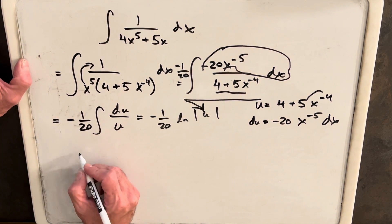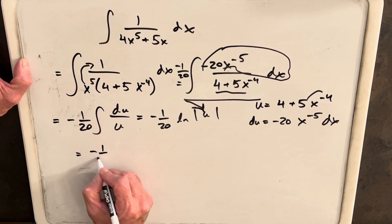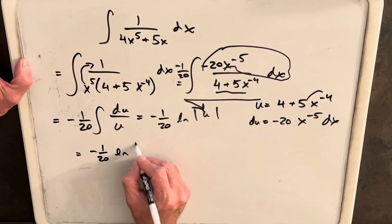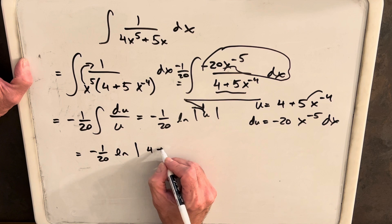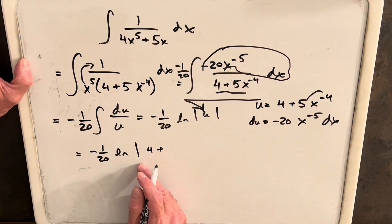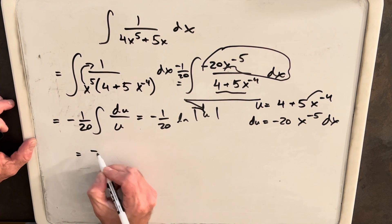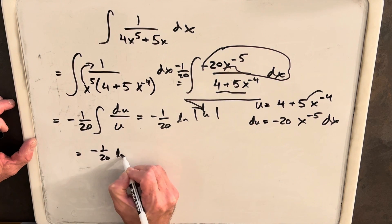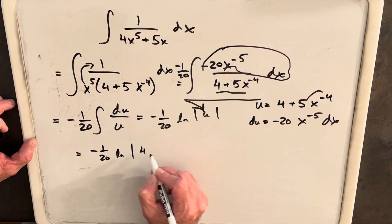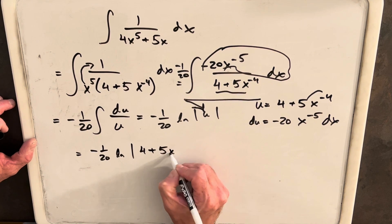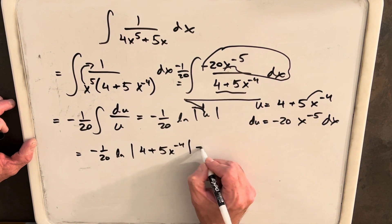Back substitute. We'll have minus 1 over 20 ln absolute value of 5, nope, absolute value of ln absolute, where's my eraser? We'll have minus 1 over 20 ln absolute value of 4 plus 5x to the minus 4 plus c.